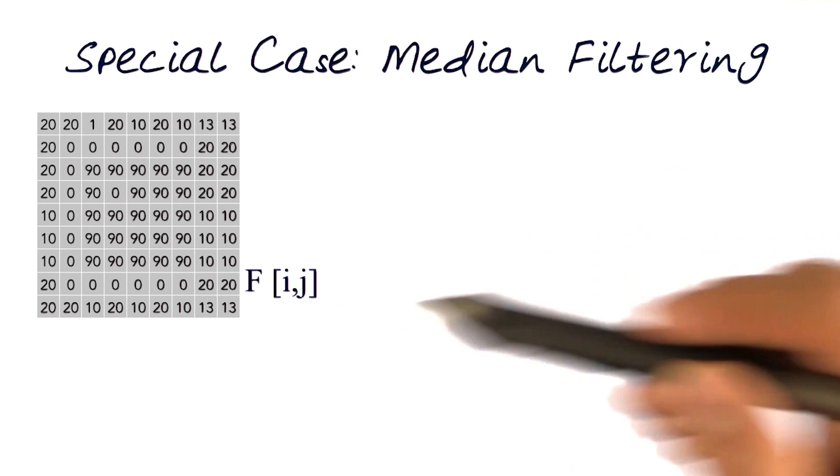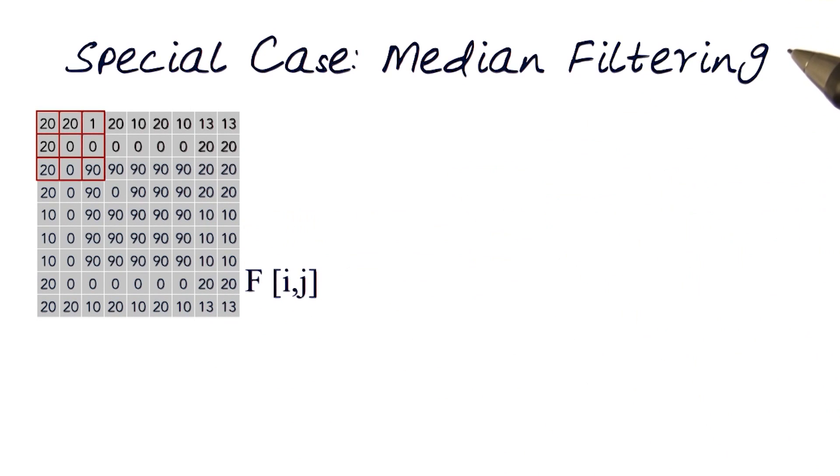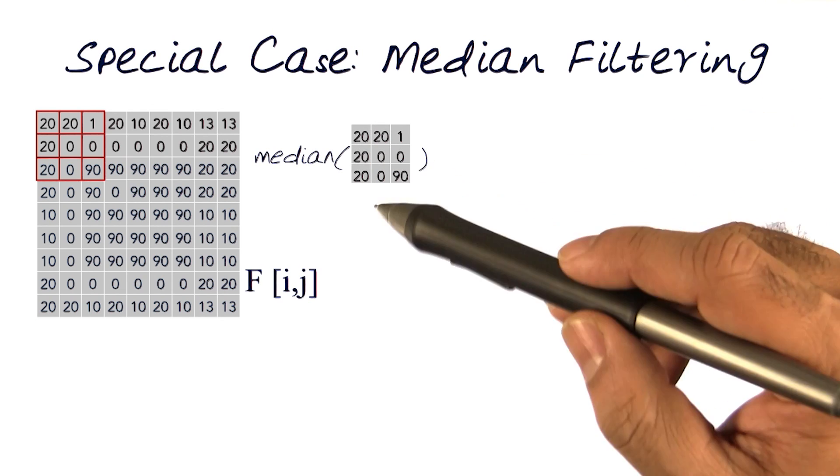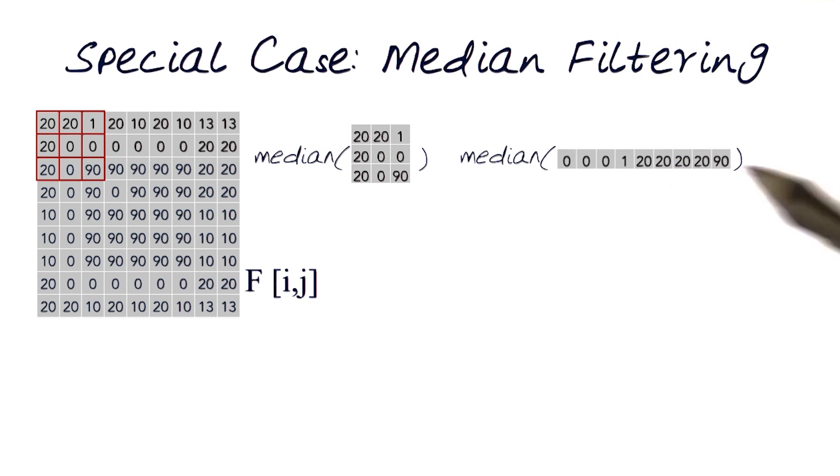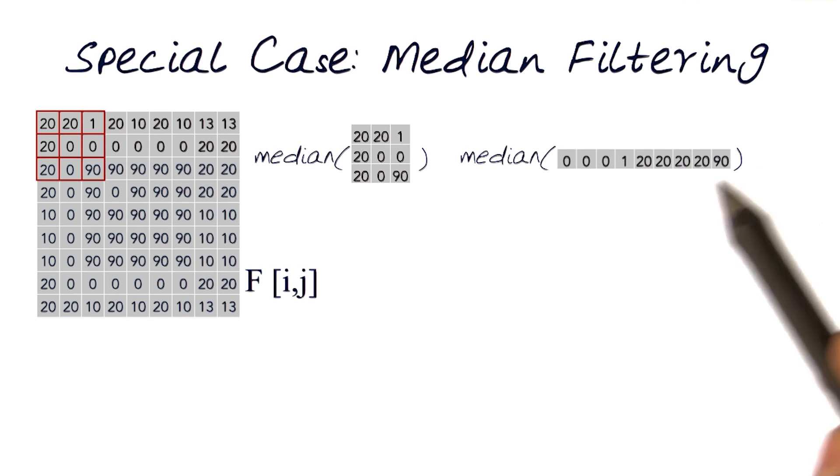Again, let's take my simple example, my input image. Look at my neighborhood of 3 by 3. And this time around, let's calculate its median of this 3 by 3. And again, what we can do is basically open up the whole matrix like so. And show the whole thing, and of course, the median of this signal or this neighborhood, 9 elements, is 20.